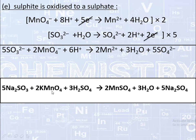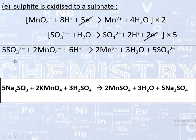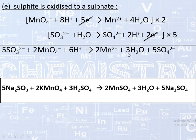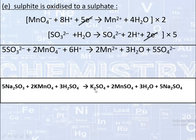We use this full reaction to balance the given equation: when KMnO4 is reacted in acidic medium with sodium sulfite (Na2SO3), it gives manganese sulfate (MnSO4), water, and sodium sulfate (Na2SO4). Balanced: 5Na2SO3 + 2KMnO4 + 3H2SO4 → 2MnSO4 + 3H2O + 5Na2SO4 + K2SO4.